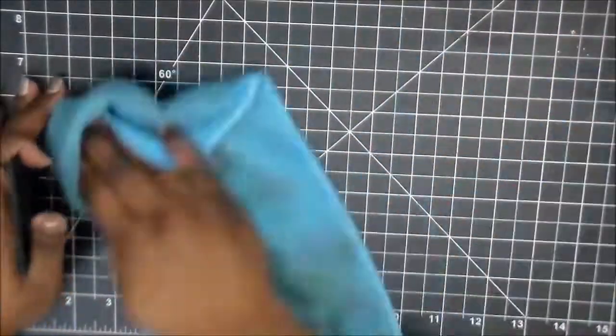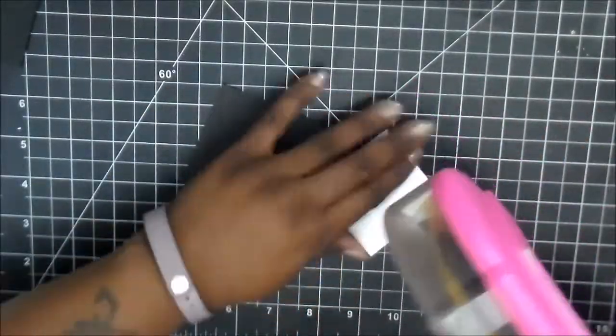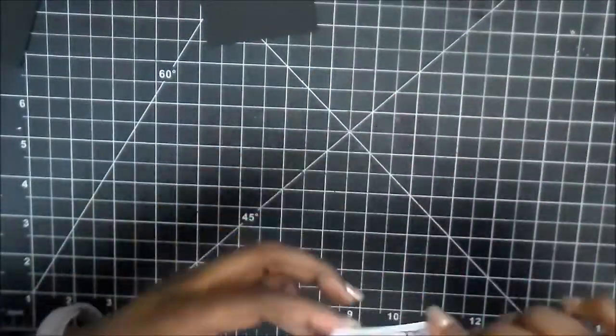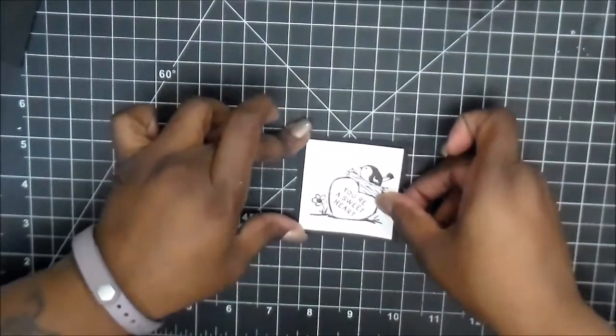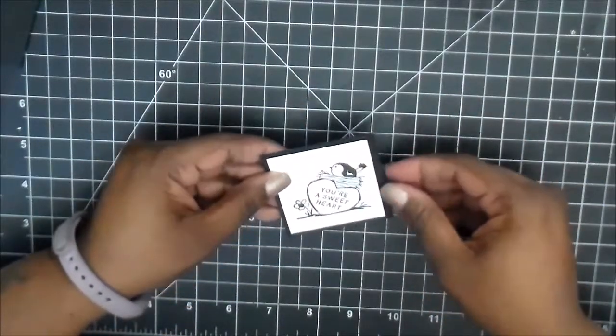Now, if you wanted to, where the hearts are, I could have done like a red glitter. Like a Spectrum Noir or Wink-A-Stella and colored that in so that it would have a little shimmer or whatever.